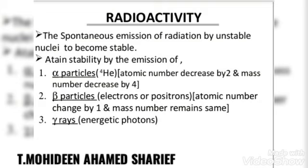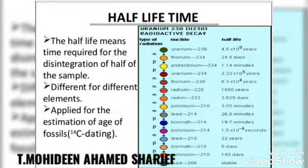Beta particles are electrons and positrons. When the nucleus emits beta particles, the atomic number changes by 1 and the mass number remains the same. Gamma rays are energetic photons. Alpha, beta, and gamma rays are emitted when a radioactive nucleus undergoes radioactivity, and they are harmful radiations.